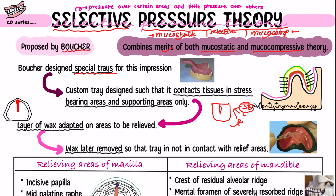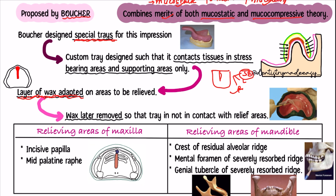Coming back to our topic: we make a special tray and add wax on the areas that need to be relieved. The relief areas of the maxilla are the incisive papilla and the mid-palatine raphe. In the mandible, the relief areas are the crest of the alveolar ridge, the mental foramen, and the genial tubercle of the severely resorbed ridge. These are the relief areas of the maxilla and mandible.